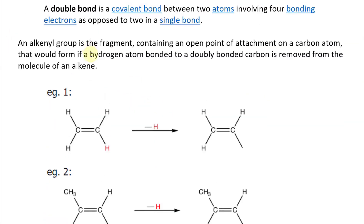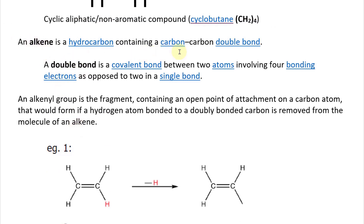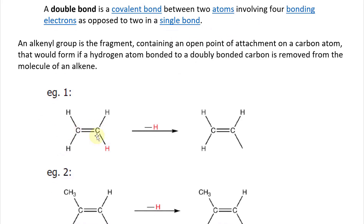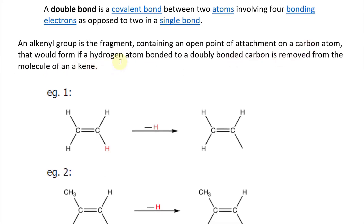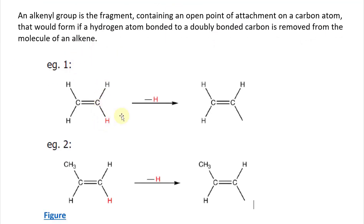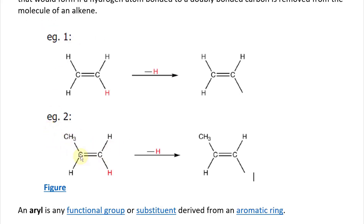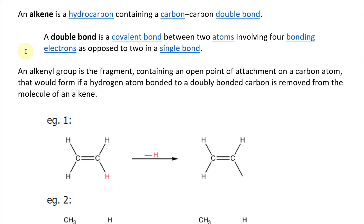An alkenyl group is the fragment containing an open point of attachment on a carbon atom that would form if a hydrogen atom bonded to a doubly bonded carbon is removed from the molecule of an alkene. So you have this H here, it's removed, and now you have this open-ended attachment. A lot of times they just draw a line and you assume the H's, but in this case you add the H's and then one is missing, giving you an alkenyl group.